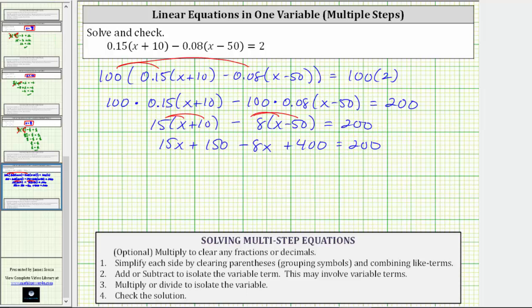Now we combine the like terms on the left side of the equation. We have two x terms and we have two constants. 15x minus 8x is 7x, we have 7x, and then 150 plus 400 is 550, giving us plus 550 equals 200.